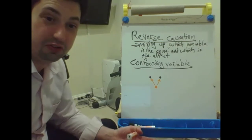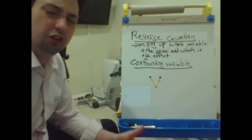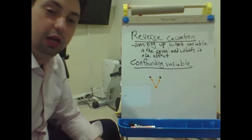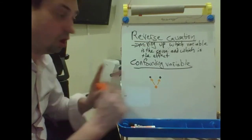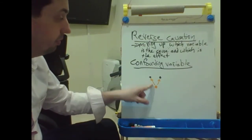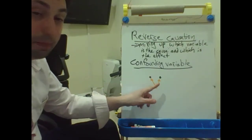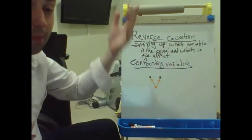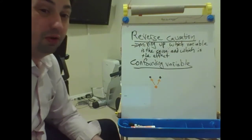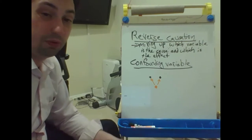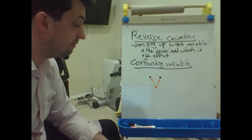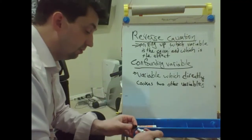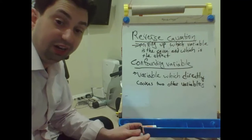The classic example is ice cream and crime. When people eat a lot of ice cream, there is also a lot of crime. Does that mean ice cream causes crime — that people get hopped up on sugar and start committing crimes? Probably not. The reason is weather causes them both. As weather heats up, people eat more ice cream, and completely independently, as weather warms up, people are more willing to commit crimes. Crime rates do indeed go up during the summer. This is a confounding variable — a variable which directly causes two other variables.